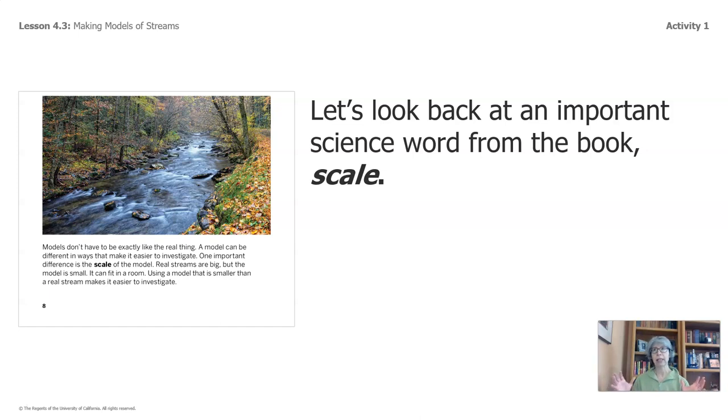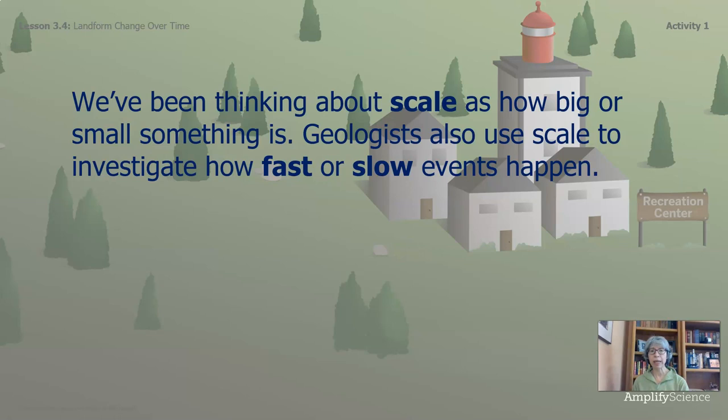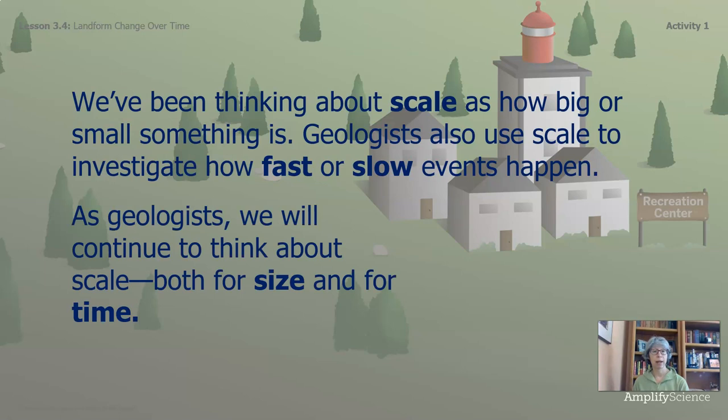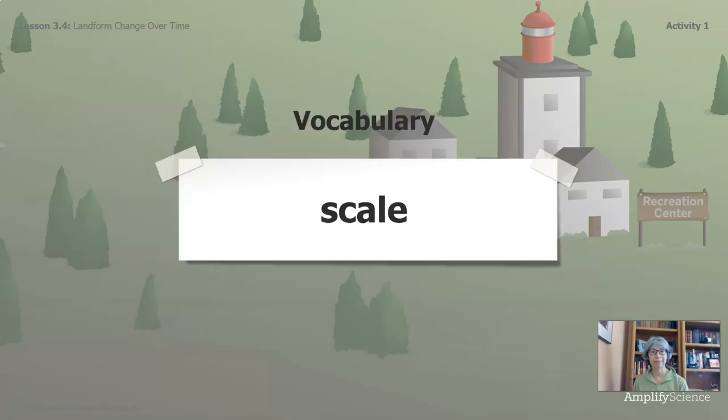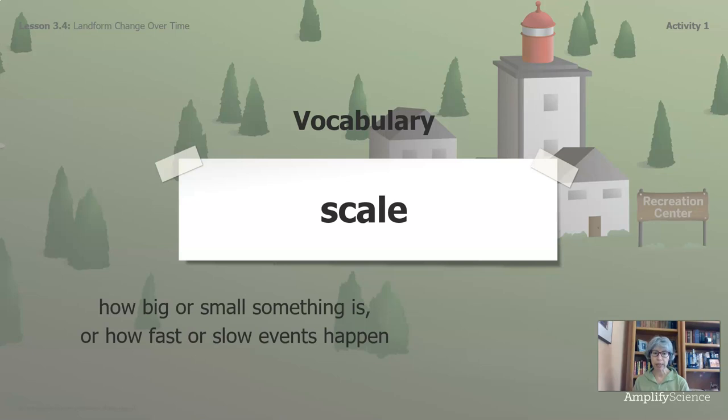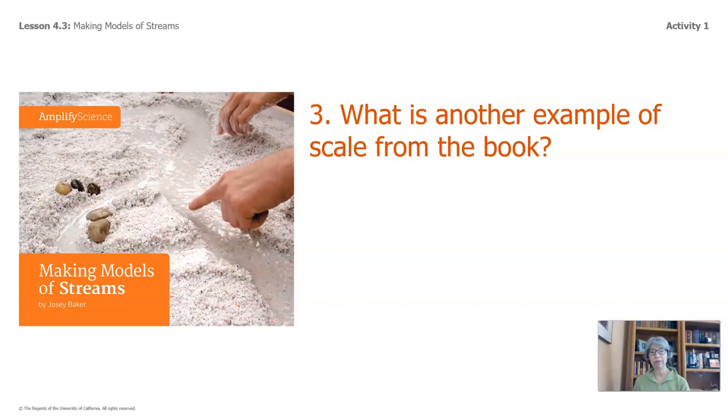I'm kind of visualizing the size of the stream and how you would bring that to scale inside of a room. We've been thinking about scale as how big or small something is. Geologists also use scale to investigate how fast or slow events happen. As geologists, we will continue to think about scale, both for size and for time. Let's punctuate this vocabulary word scale. How big or small something is, or how fast or slow events happen. What is another example of scale from the book?